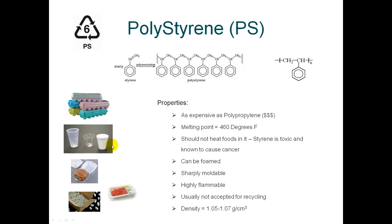Polystyrene is used in almost all foamed materials that you'll see in the grocery store or anywhere else you go. For example, the common styrofoam cup is made out of polystyrene. Egg cartons are made out of polystyrene. The foam packaging material used in boxed crates and so forth is also made out of polystyrene.